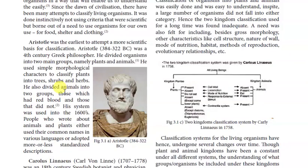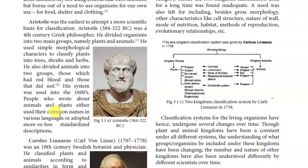Aristotle also divided animals into two groups: those which have red blood and those which did not. His system was used for a long time, and people who wrote about animals and plants used their common names in various languages or adopted more or less standardized descriptions.